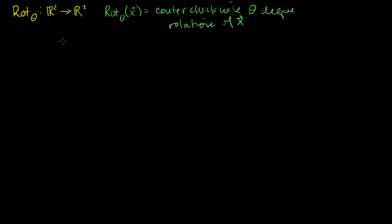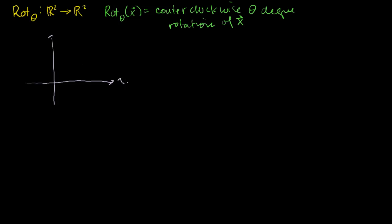To make sure we can actually do this, we need to confirm there's an actual linear transformation. I'll show that visually since I don't have a mathematical definition yet. Let me draw some axes — the vertical x2 axis and the horizontal x1 axis. If I have some vector x like that, a counterclockwise rotation of this will look like the blue vector, where this angle right here is theta. So this is the rotation through an angle of theta of x.